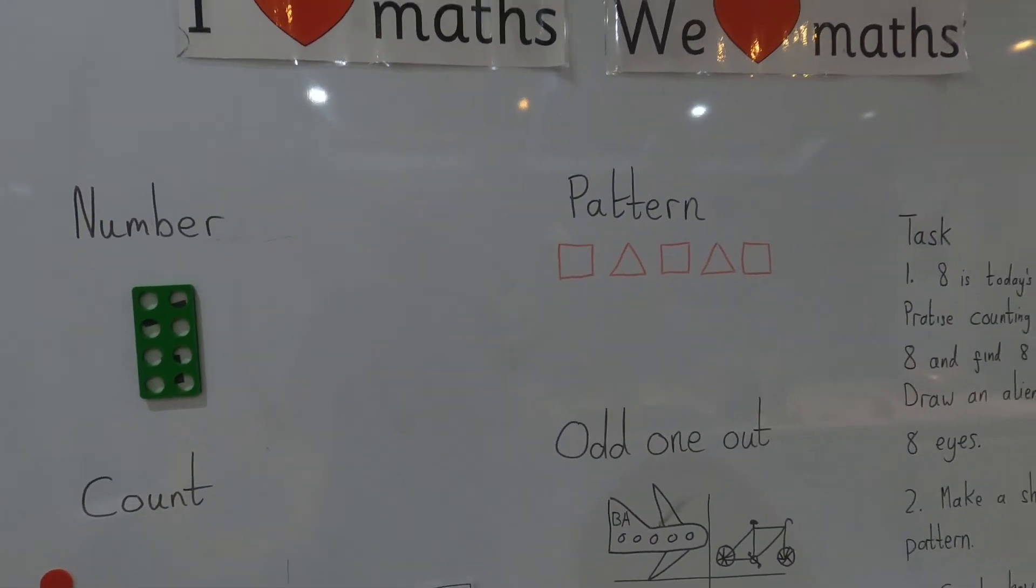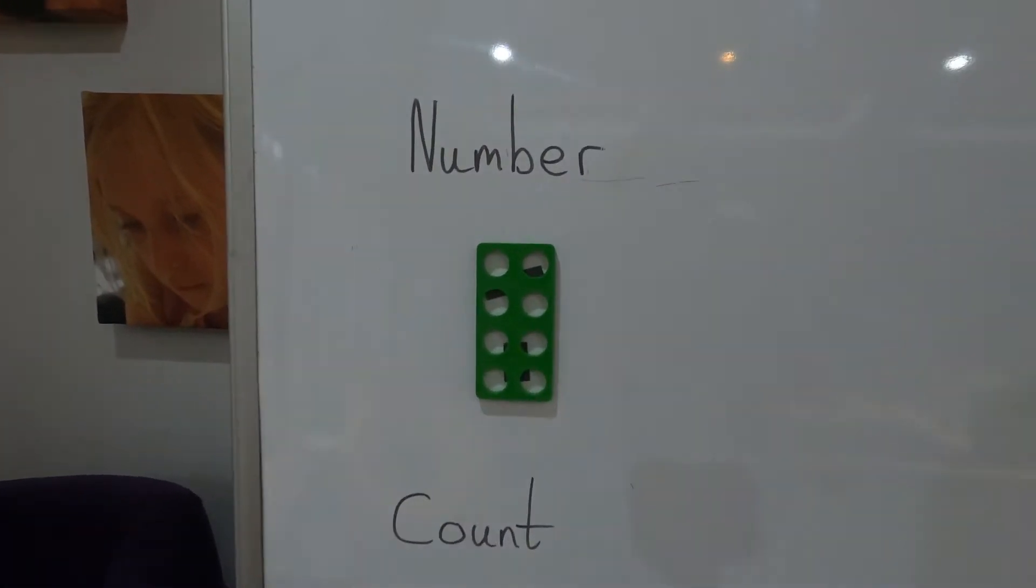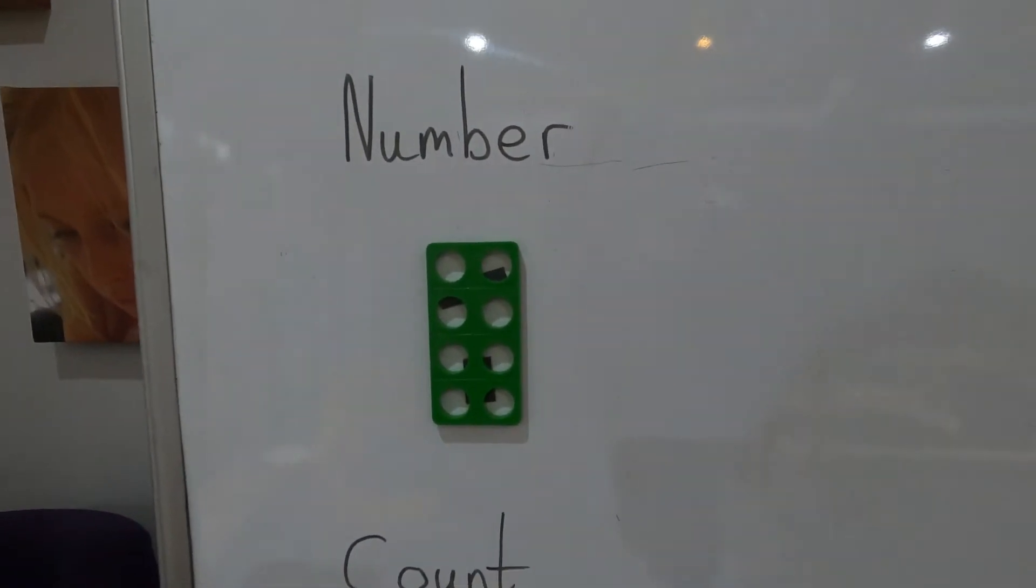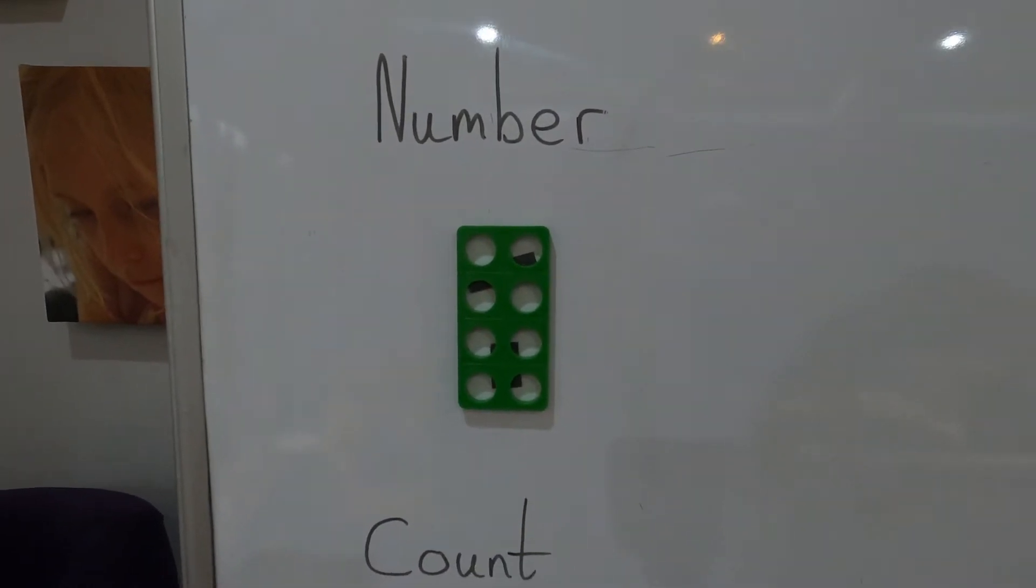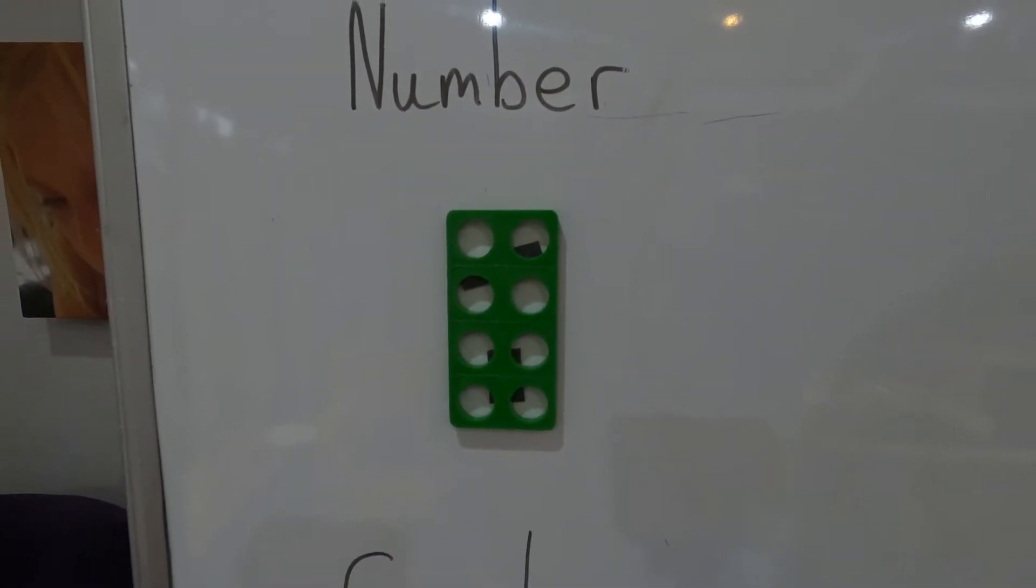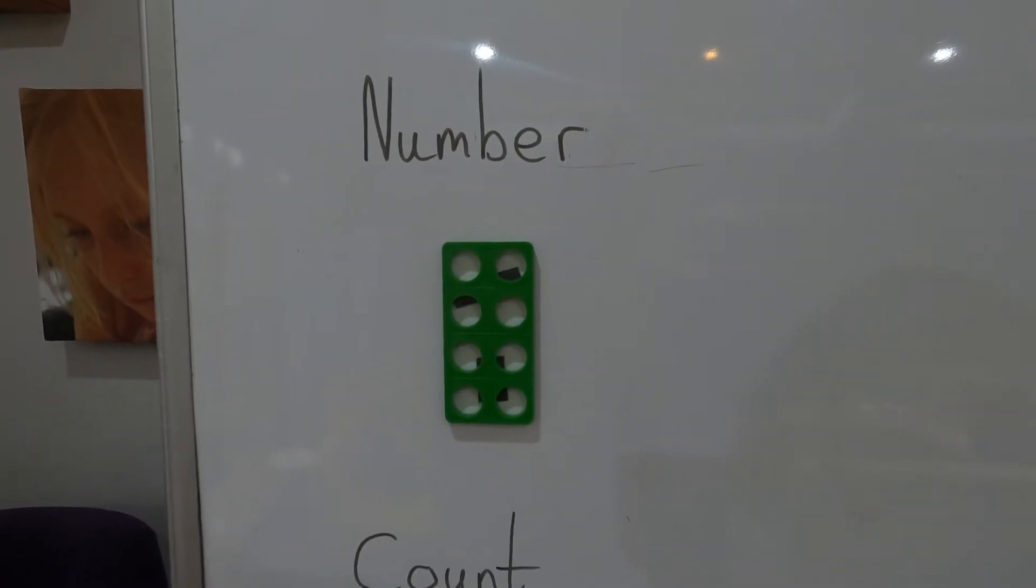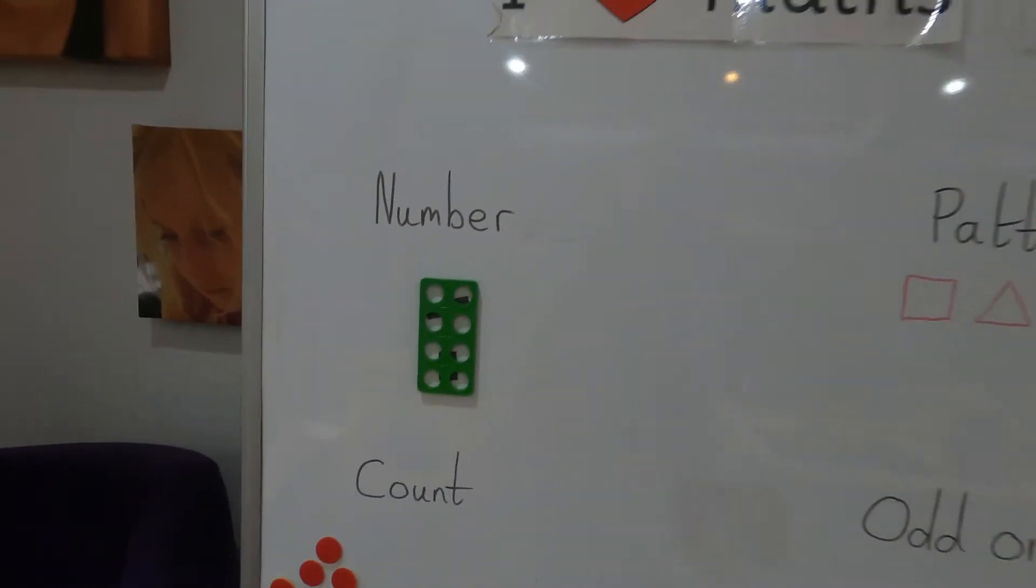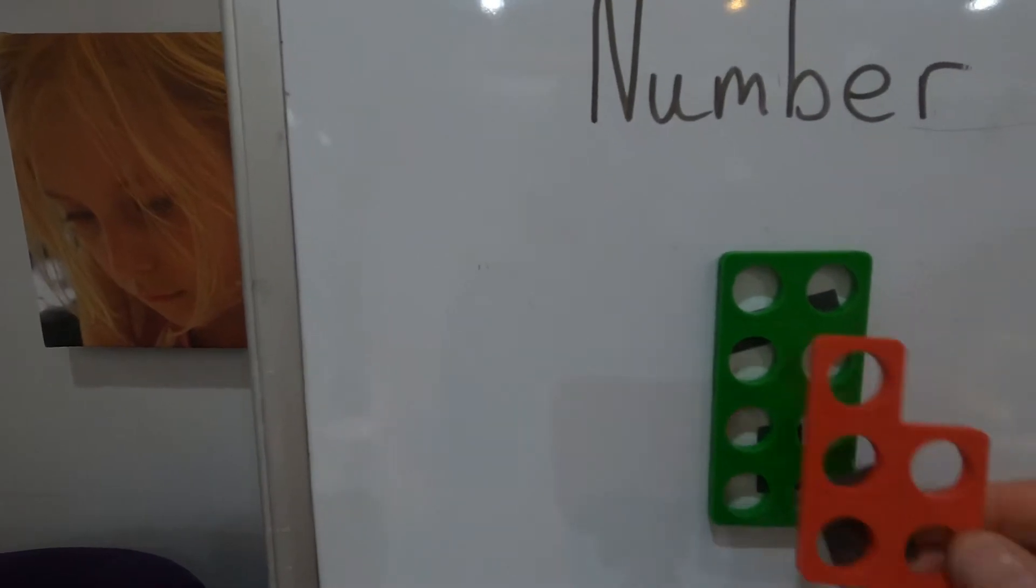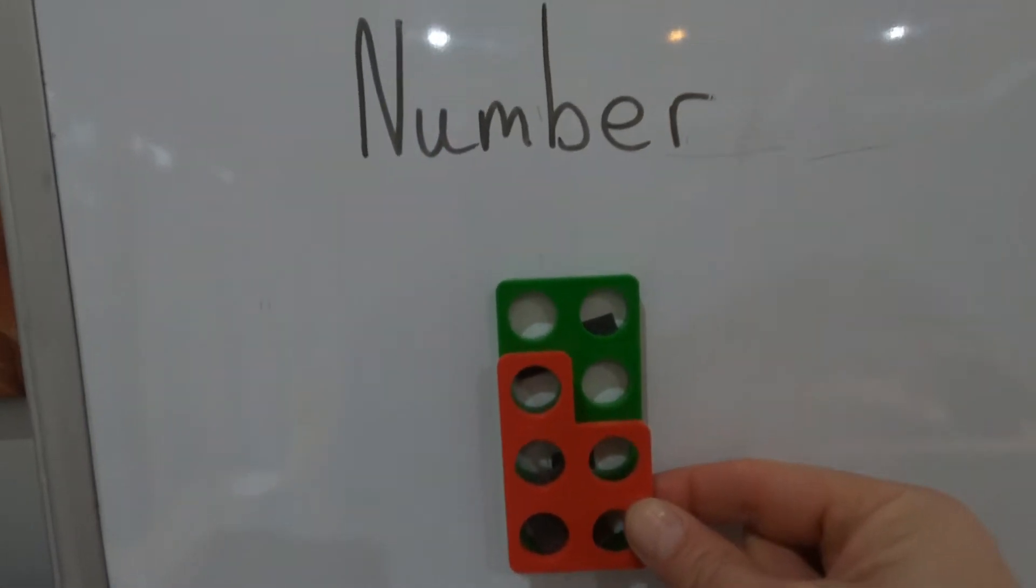Today's number is quite a big number. Yesterday's number was five, so what's today's number? Is it bigger than five or smaller than five? I think it's bigger than five. Let's check, shall we? Let's get a five. Here's a five. Oh yes, it's bigger, there's more.